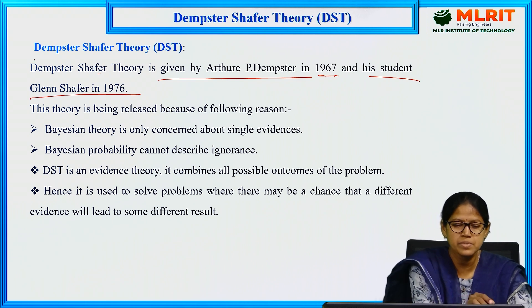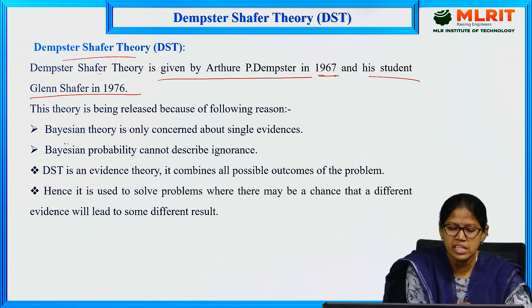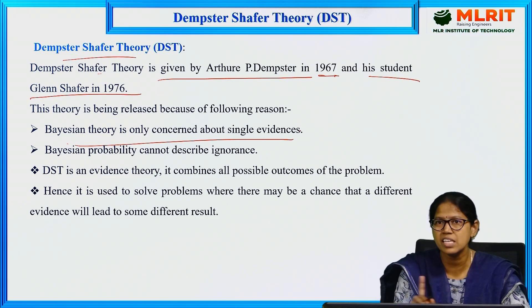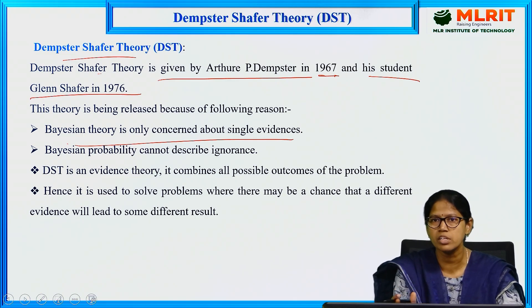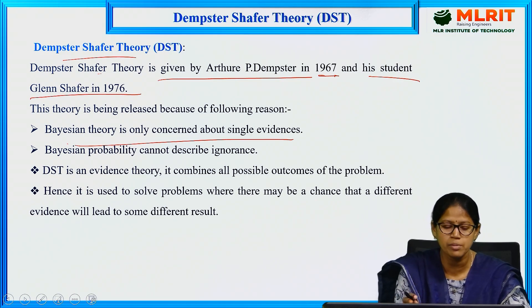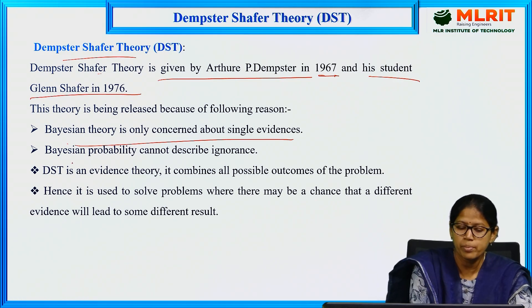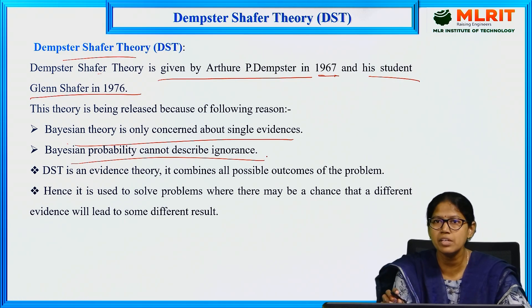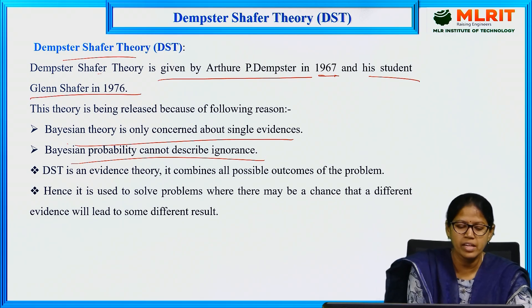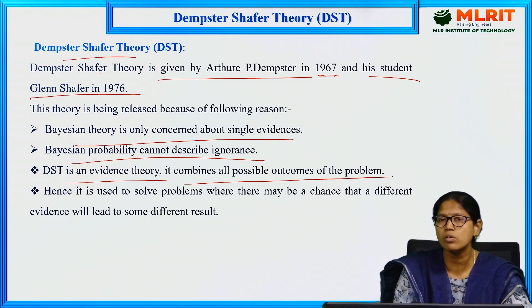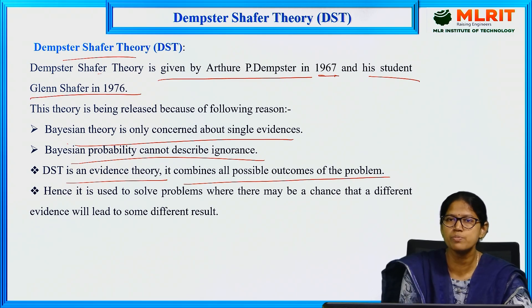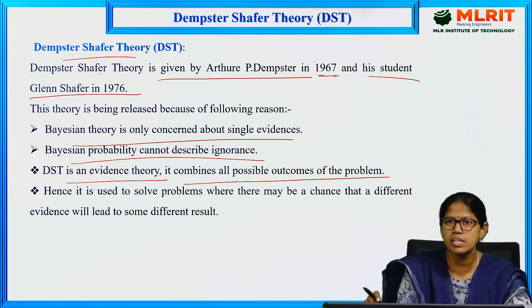But why this Dempster-Shafer theory? Because Bayesian theory is only concerned about single evidences. Based upon that single evidence, it gets some conclusion about that statement or problem, and Bayesian probability cannot describe ignorance. Whereas Dempster-Shafer theory is an evidence theory — it combines all possible outcomes of the problem and takes all those possibilities to get some conclusion.